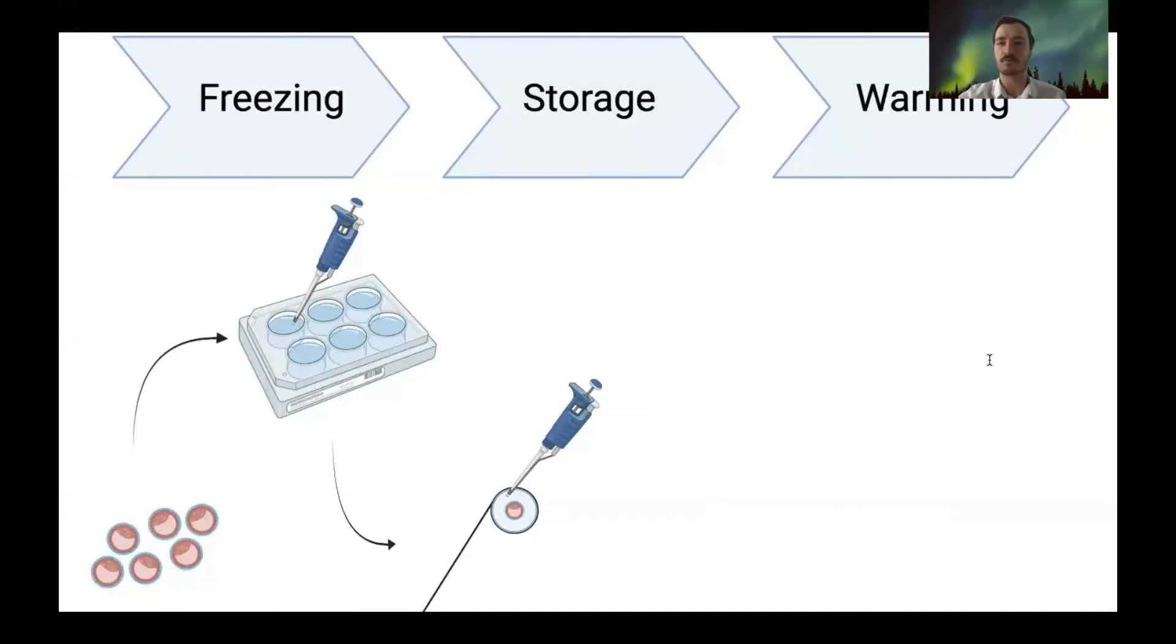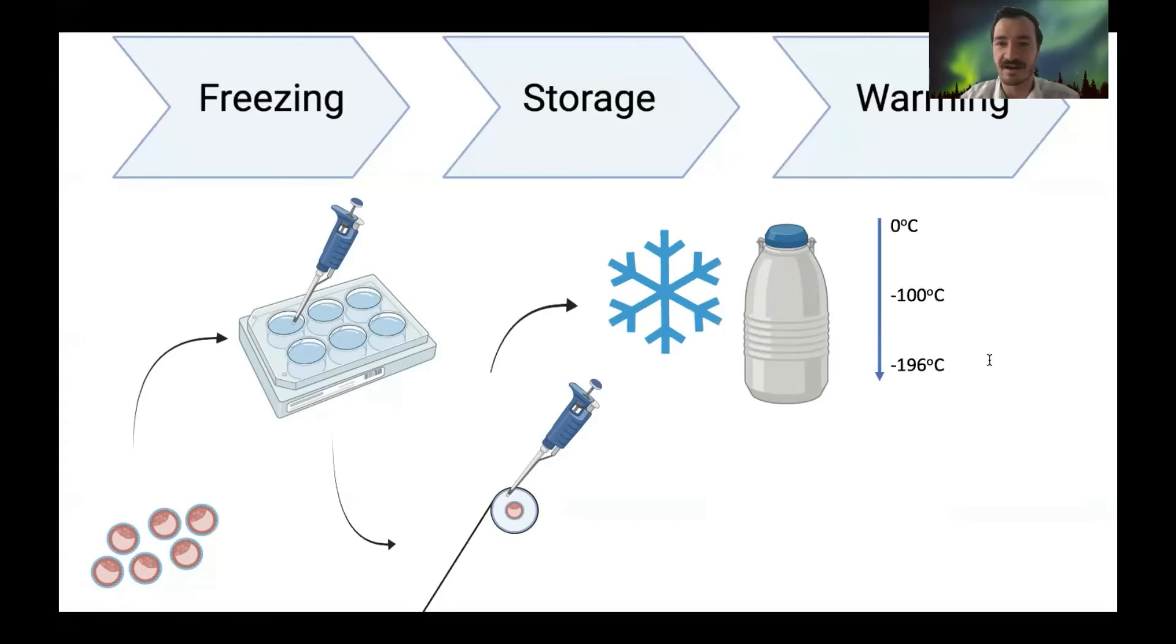Once those embryos have equilibrated in the cryoprotectants, they are loaded onto a cryo device - this one is called a cryo hook - and the embryos are then very rapidly frozen and stored for future use in liquid nitrogen. By having such a rapid freezing rate, vitrification protocols traverse the ice forming temperatures of between zero and minus 100 extremely quickly, which gives the sample very little time to actually form ice in the first place.